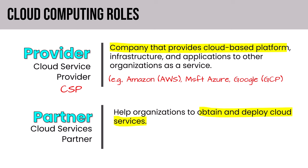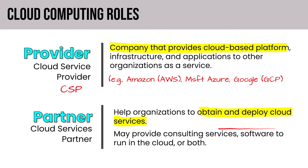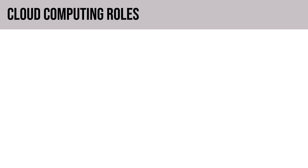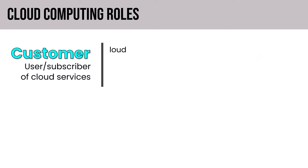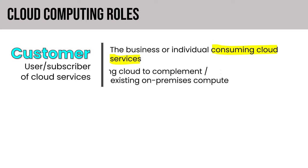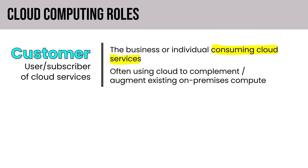A cloud services partner is a company that helps organizations obtain and deploy cloud services. They may offer consulting services, software that runs in the cloud, or both. Avanade, Tata, and Accenture are good examples of big cloud services partners. The customer is the business or individual consuming the cloud services from the CSP — often using public cloud to complement existing on-premises compute, resulting in a hybrid cloud configuration, currently the most common cloud implementation.